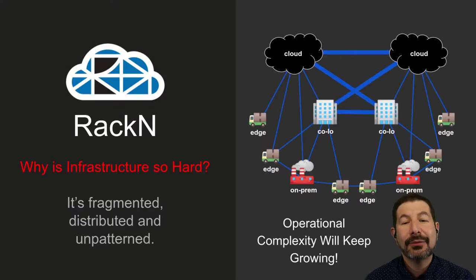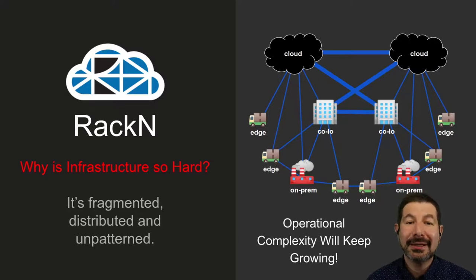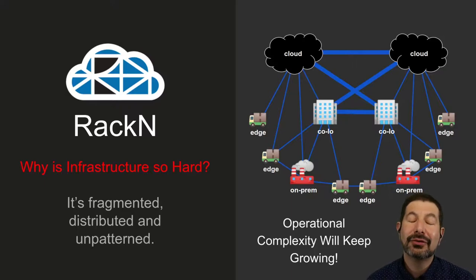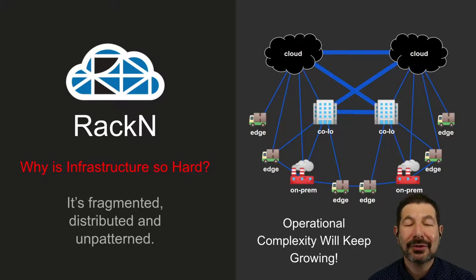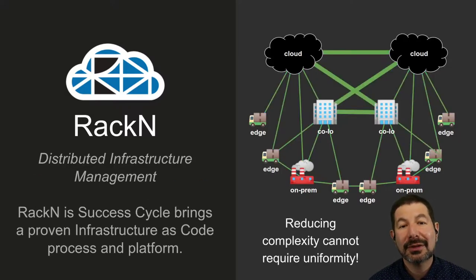Before you think about anything else, it's important to ask yourself: why is infrastructure so hard? What we see is that while companies have many types of infrastructure, they don't have a consistent way to solve that problem. It's all fragmented, distributed, and unpatterned — they keep reinventing solutions for every type of infrastructure they have, creating a huge amount of operational complexity.